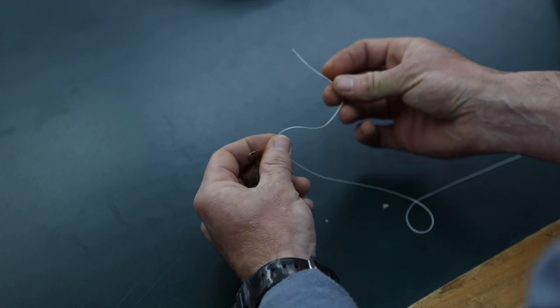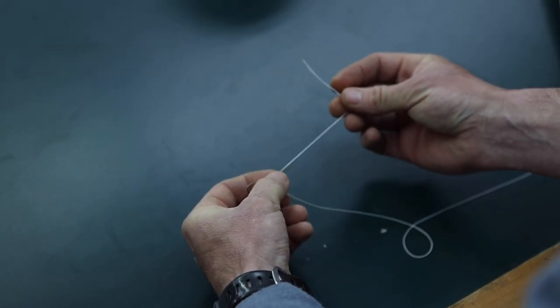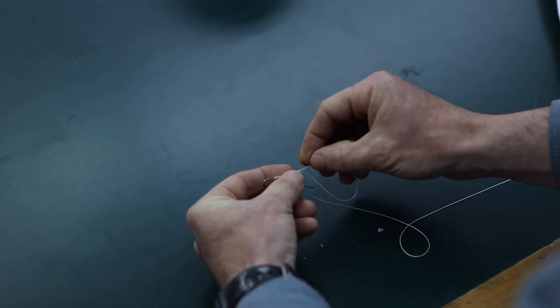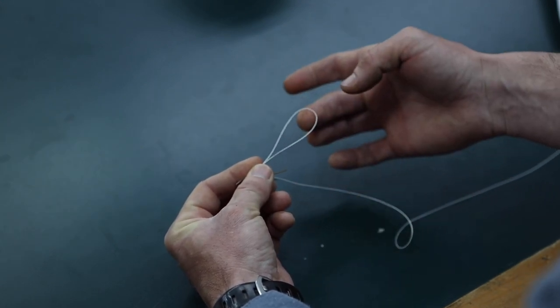The first thing I'm going to do is pinch the fly in my left hand. Then I'm going to take this tag end, and I'm going to fold it back towards the fly, and pinch it between my index and thumb right there. I've created this nice loop right here.